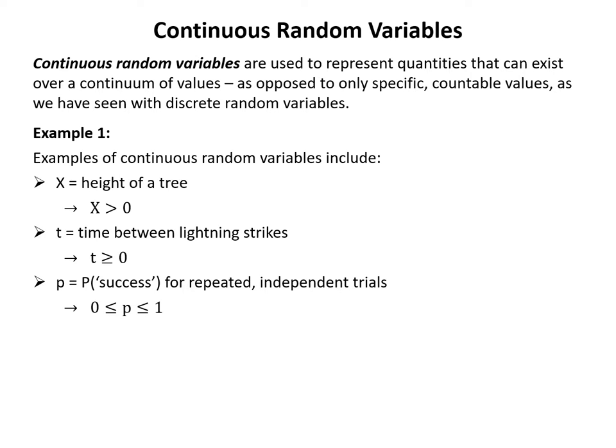A third example of particular interest in this course is p, the probability of success for repeated independent trials. This is a parameter we've seen in several probability distributions already, and all values of p will always be greater than or equal to zero and less than or equal to one.